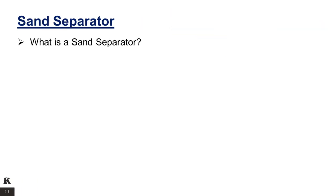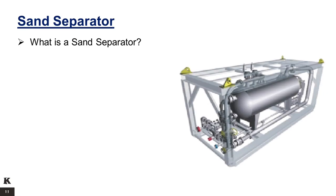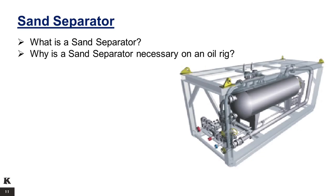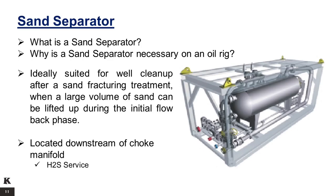Sand separator. Sand separators are pressure vessels that remove sand and other sediments from drilling mud in the oil and gas industry. These machines help prevent common problems associated with sand in oil wells, such as erosion and plugging. In the absence of a sand separator, downstream processing of the well mud will become complicated, putting unnecessary pressure on extraction systems and consuming irrational amounts of energy and resources. Efficient sand separators can prolong the life of downstream mud processing equipment. It is ideally suited for well cleanup after a sand fracturing treatment, when a large volume of sand can be lifted up during the initial flowback phase. It is located downstream of the choke manifold, is an H2S service unit, and exists in 1,345 PSI or 1,440 PSI working pressure units.